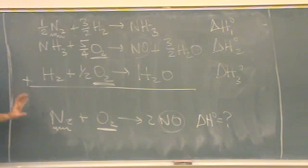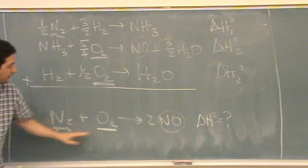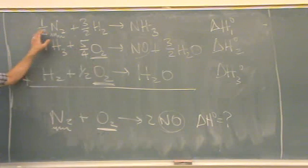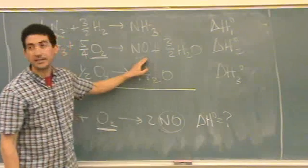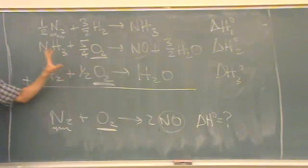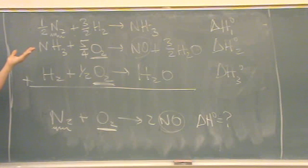Once you have those, make sure they're on the right side. These two have to be in the reactants. And they are. Now, this one has to be in the products. It is. If it wasn't, I'd multiply it by negative 1 and flip the reaction over. So that part's fine.